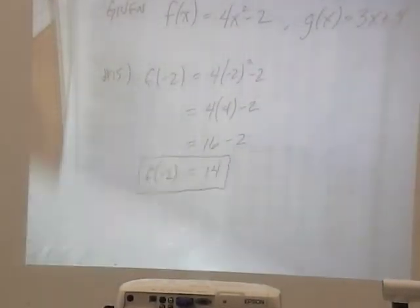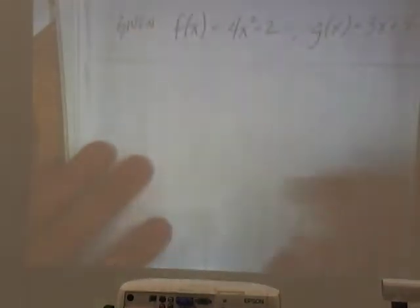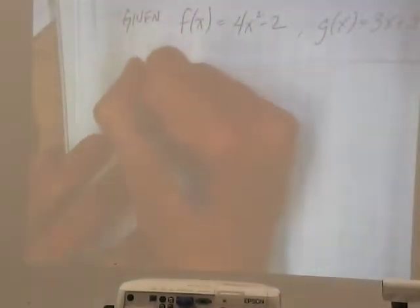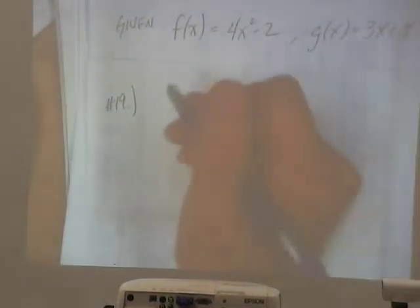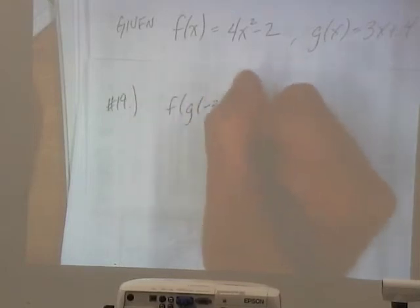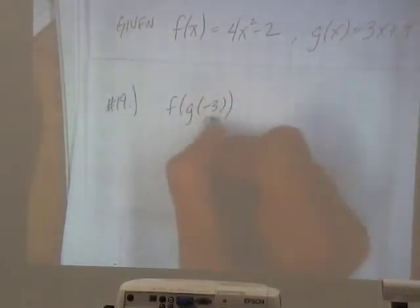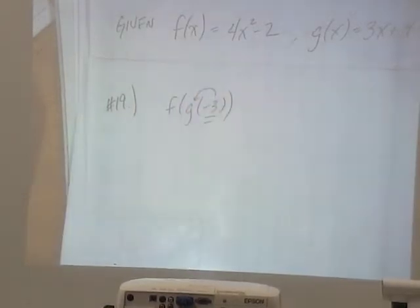19, they want us to find f of g of negative 3. So we're going to take the negative 3 and plug it into the g function. Then we'll get some number.